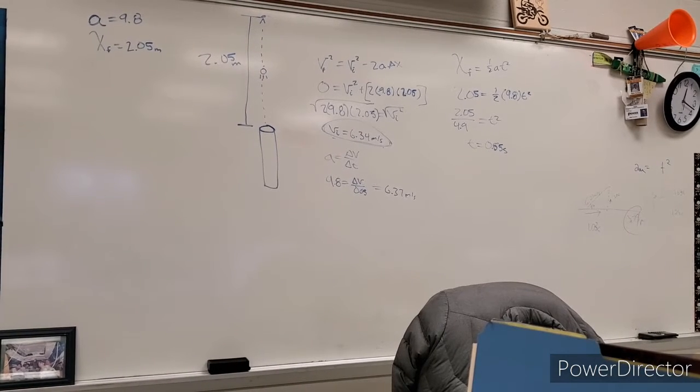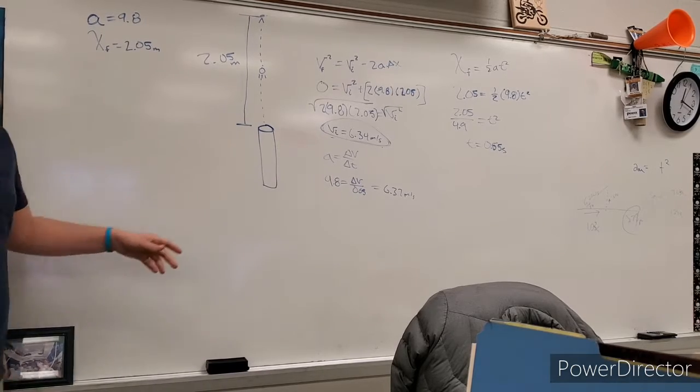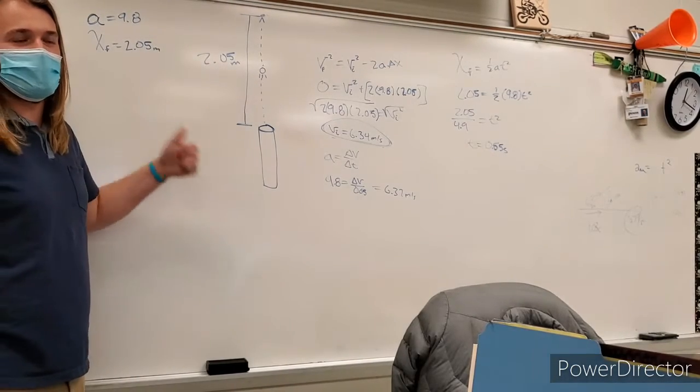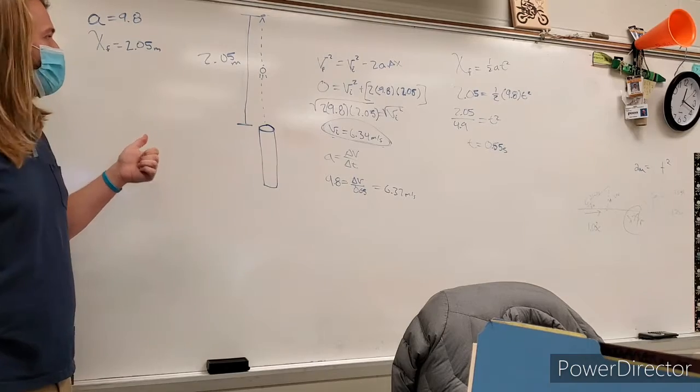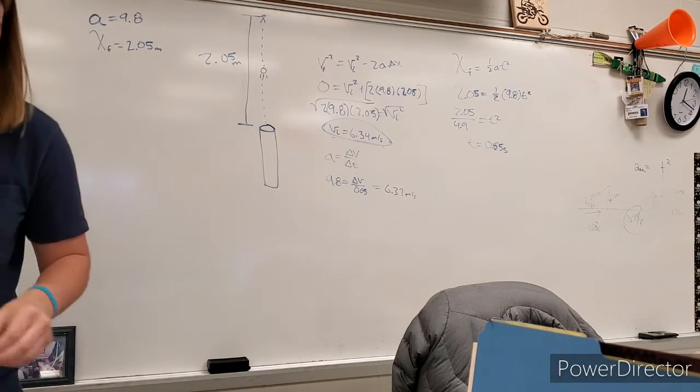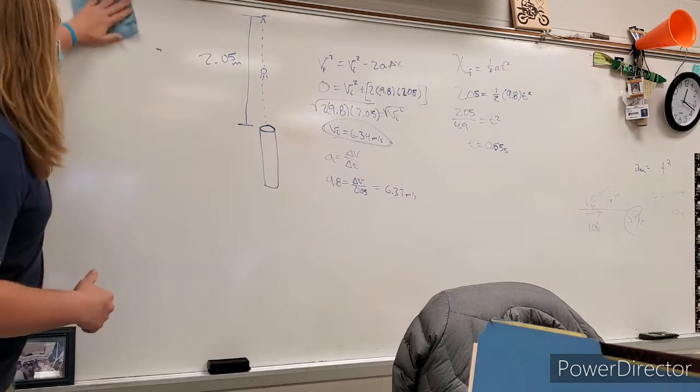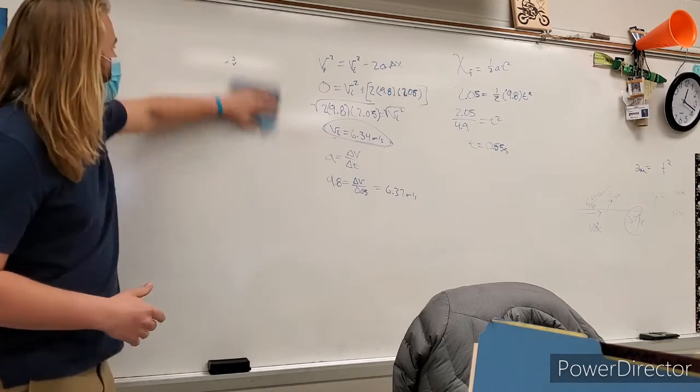Alright, so we figured out our initial velocity by firing the marble straight up and down. We used our acceleration, we used our distance, and we used time to find our initial velocity. That's great, but that's a linear direction, right? That's only one direction, up and down.